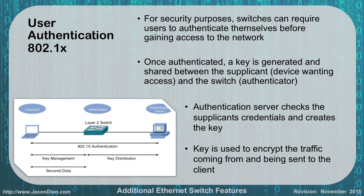The next one we're going to talk about is 802.1X — and again, any time you see an 802.something, you better write it down. This one is user authentication. It allows your switches to have additional security, requiring users to authenticate themselves before they get access to the network. Once authenticated, a key is generated and provided between the two devices. The device wanting access is called the supplicant, and the device granting access is called the authenticator. In this case, your client is the supplicant and your switch is the authenticator.